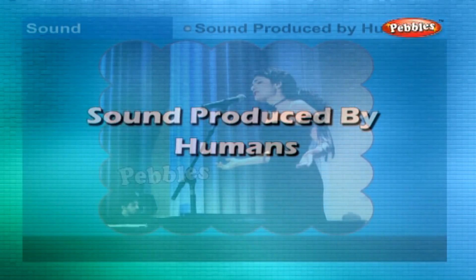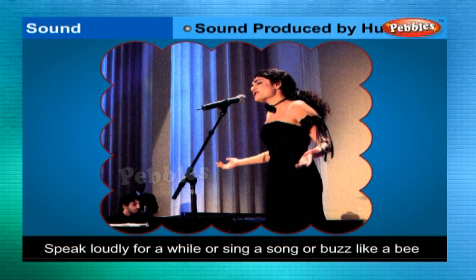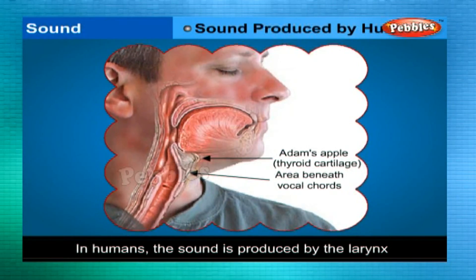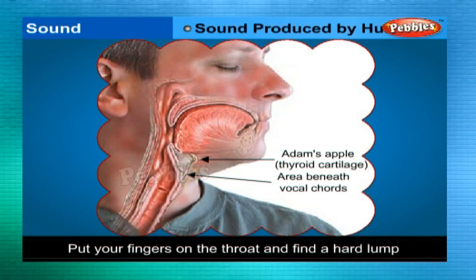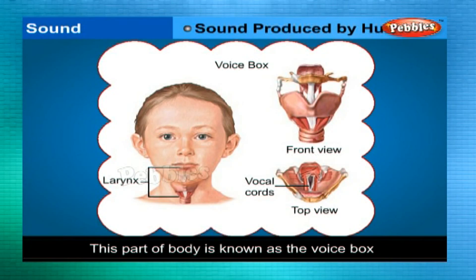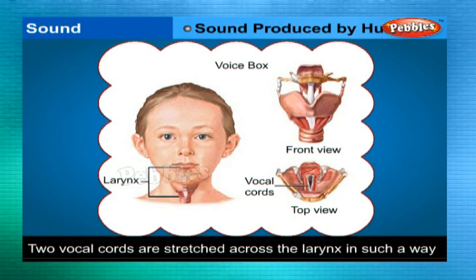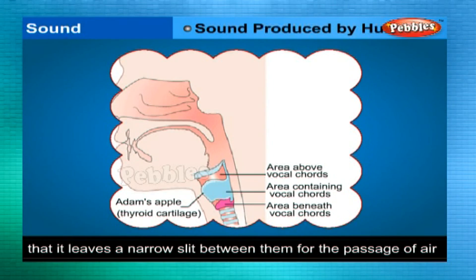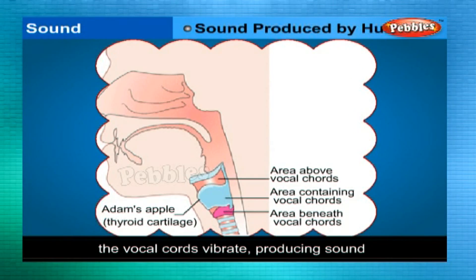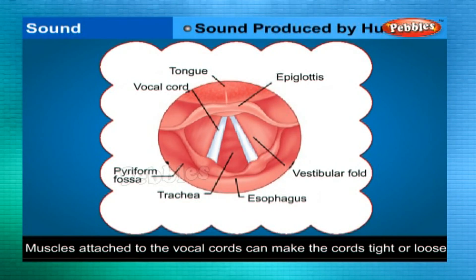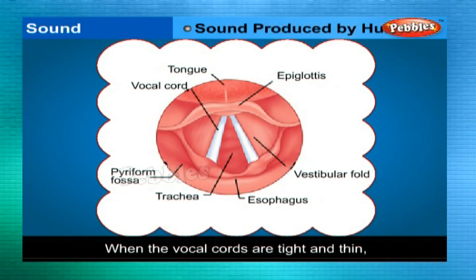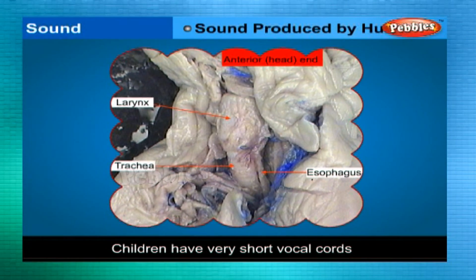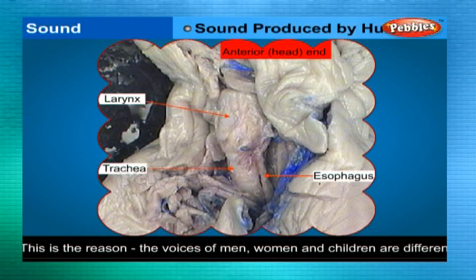Sound produced by humans: speak loudly for a while or sing a song or buzz like a bee. Put your hand on your throat — do you feel any vibration? In humans, sound is produced by the voice box or the larynx. Two vocal cords are stretched across the larynx, leaving a narrow slit for the passage of air. When the lungs force air through the slit, the vocal cords vibrate, producing sound. When the vocal cords are tight and thin, the quality of voice differs from when they are loose and thick. Children have very short vocal cords, which is why the voices of men, women and children are different.